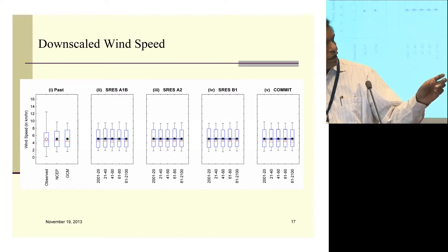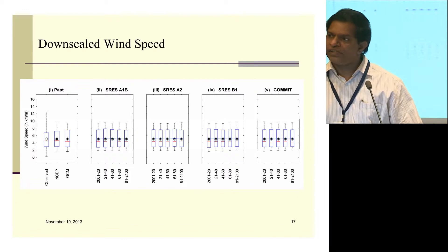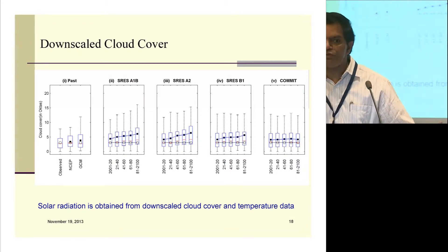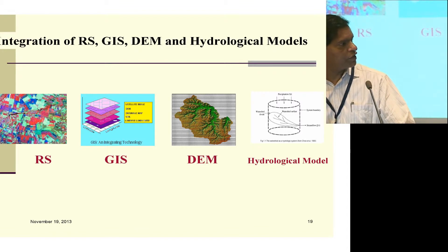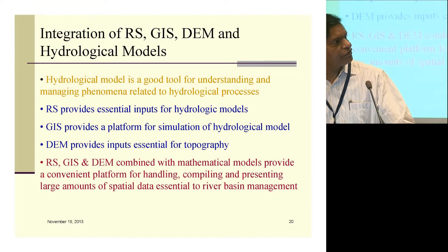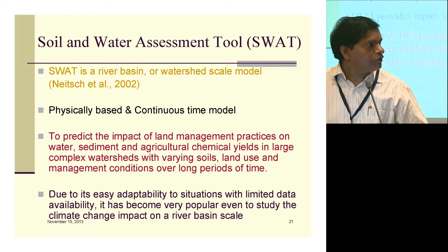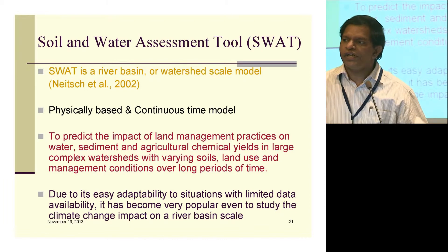All these variables are required for our hydrologic model to run at a daily or finer time scale and generate output. In addition to the projected climate variables, a good hydrologic model also requires land use and land cover information from remote sensing, drainage pattern from GIS, and a digital elevation model. We used the SWAT conceptual model, feeding all these inputs to get output in terms of stream flow projections.